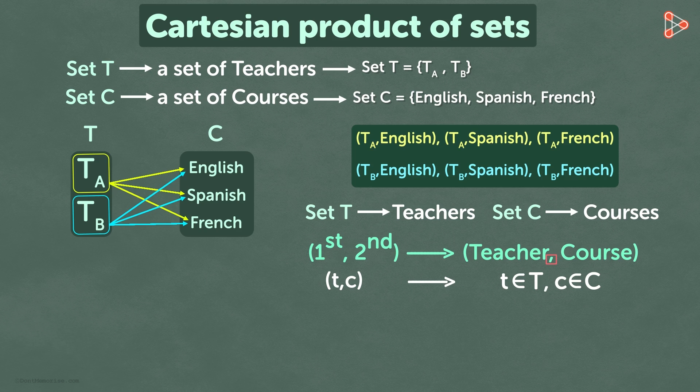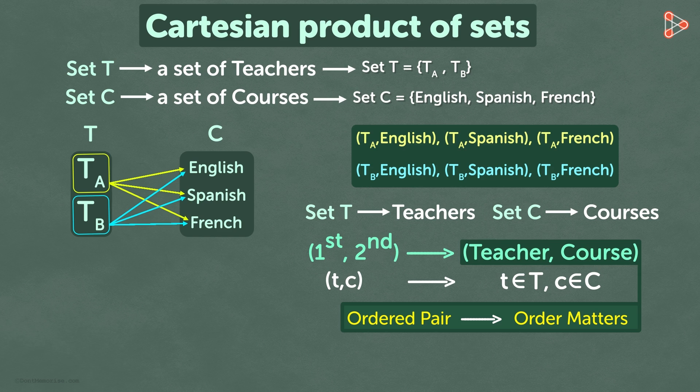Therefore, every combination of teacher comma course is called an ordered pair. Ordered pair implies that the order matters. It is represented using round brackets. This is the logic behind the round brackets.